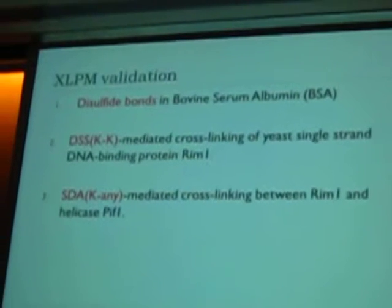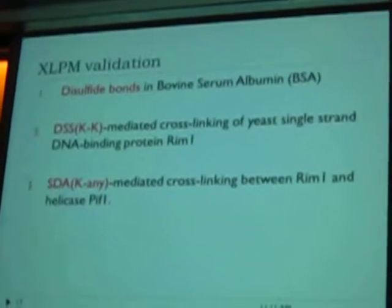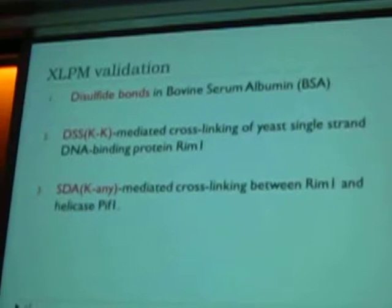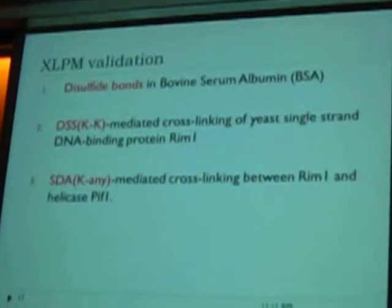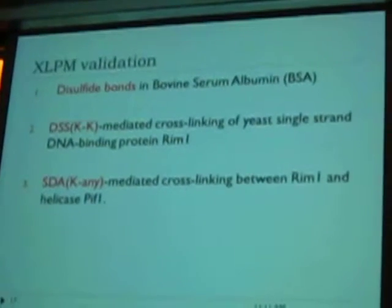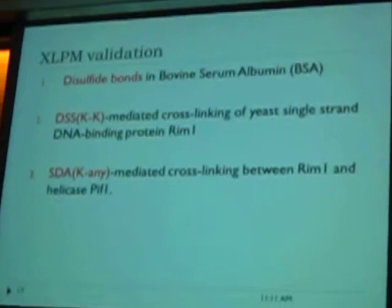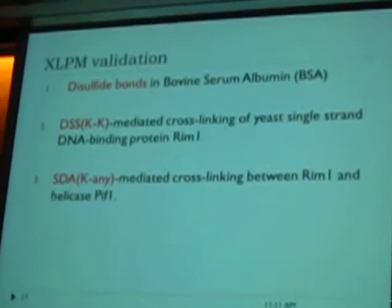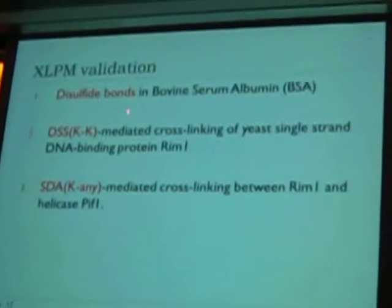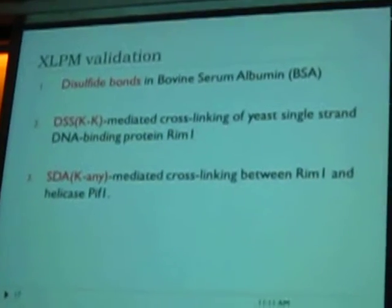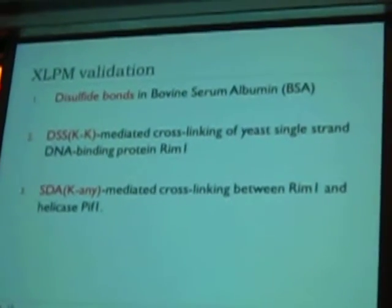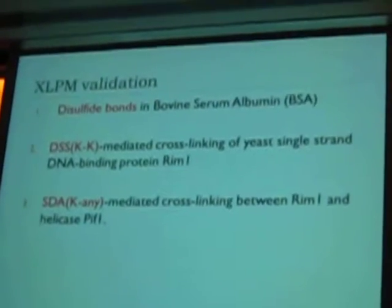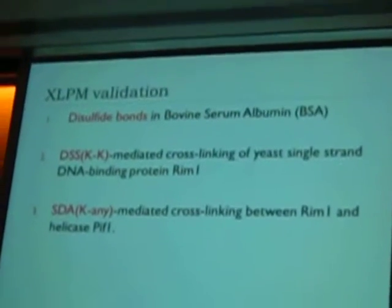We validated our software on three systems with three specific purposes: disulfide bond, DSS — which is a specific cross-linker that joins lysine to lysine — and SPA, which can join lysine to any amino acid. The purpose of the first is to compare XLPM with other good software; we compared to StavOx, because it produces really good results compared to the tools available right now.